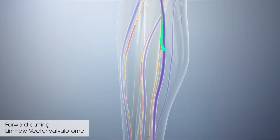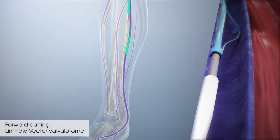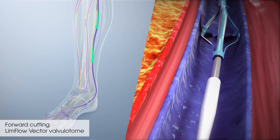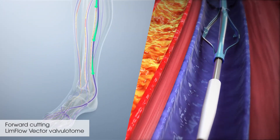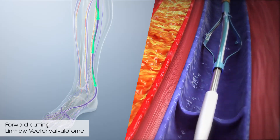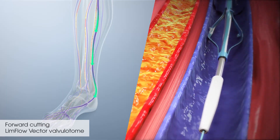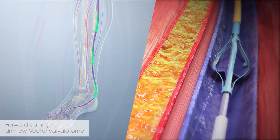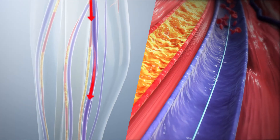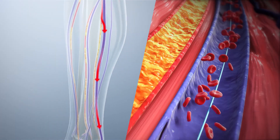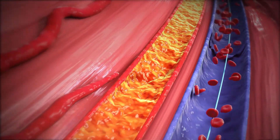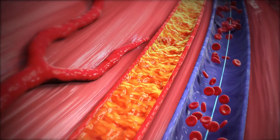The forward-cutting LimFlow Vector valvulotome is inserted through the arterial access and, by advancing it below the crossing point and into the foot, it renders the venous valves incompetent. This allows reversal of flow in the veins, bringing oxygenated blood to the foot.